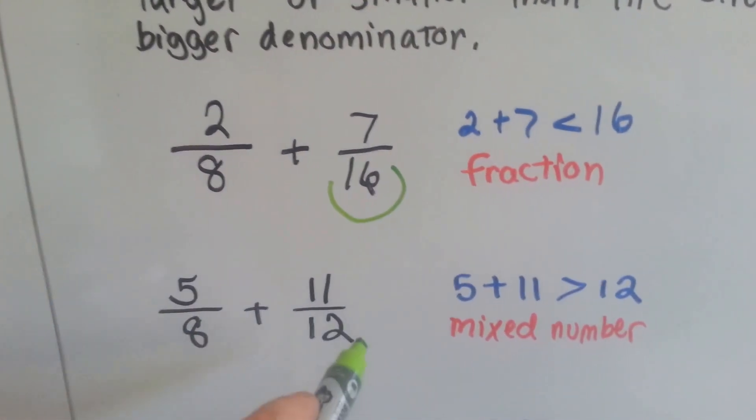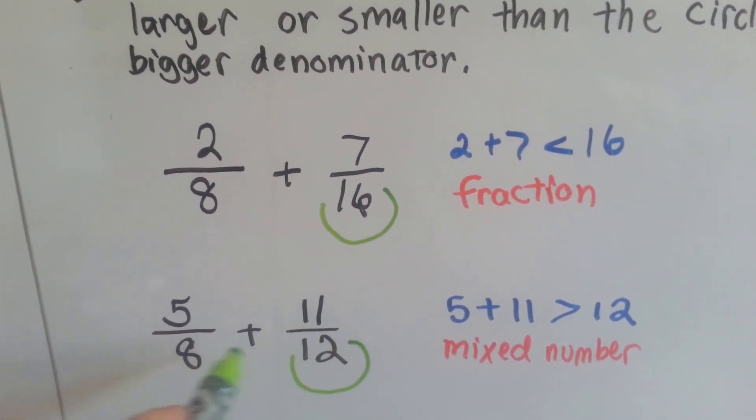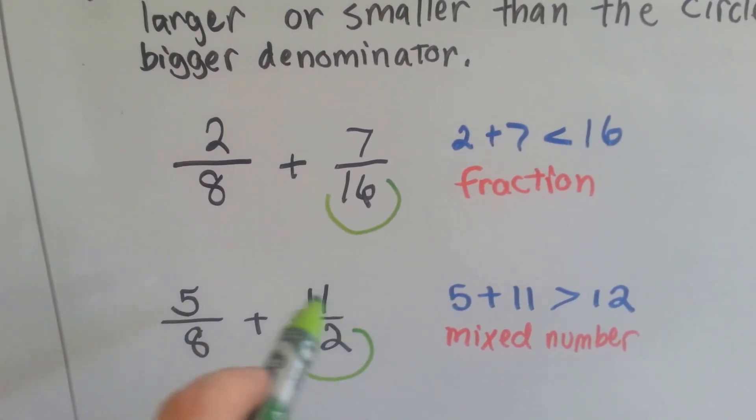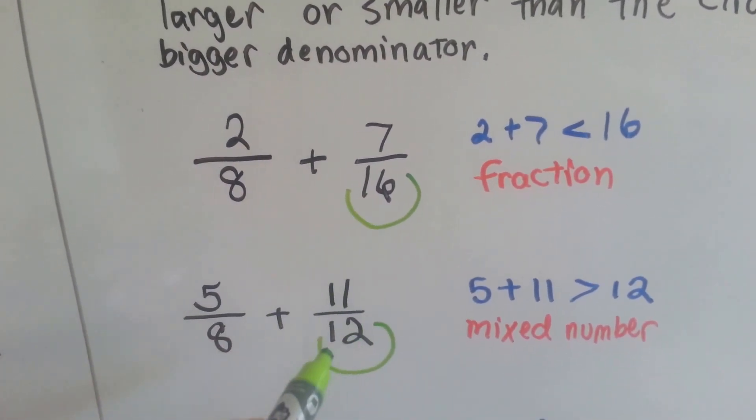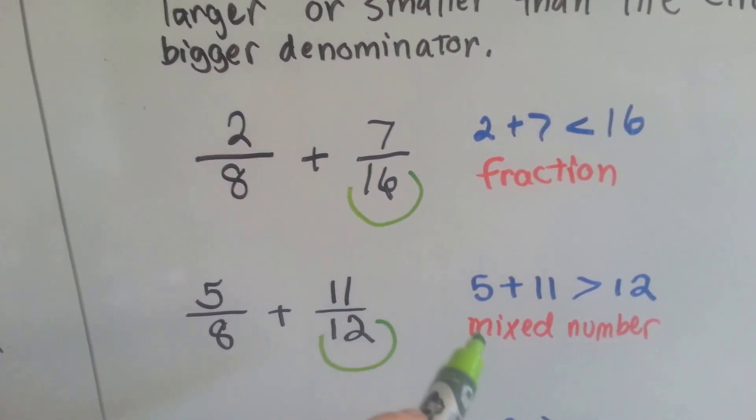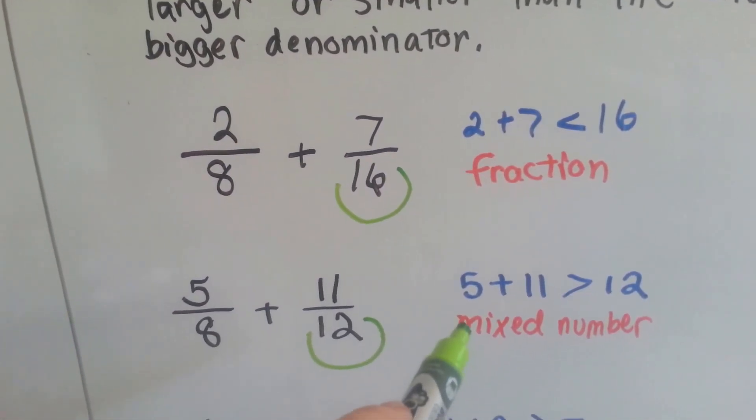Find the bigger denominator. It's the 12. We add the numerators. 5 plus 11 is 16. 16 is bigger than 12, so we know the answer is going to be a mixed number. A whole number with a fraction.